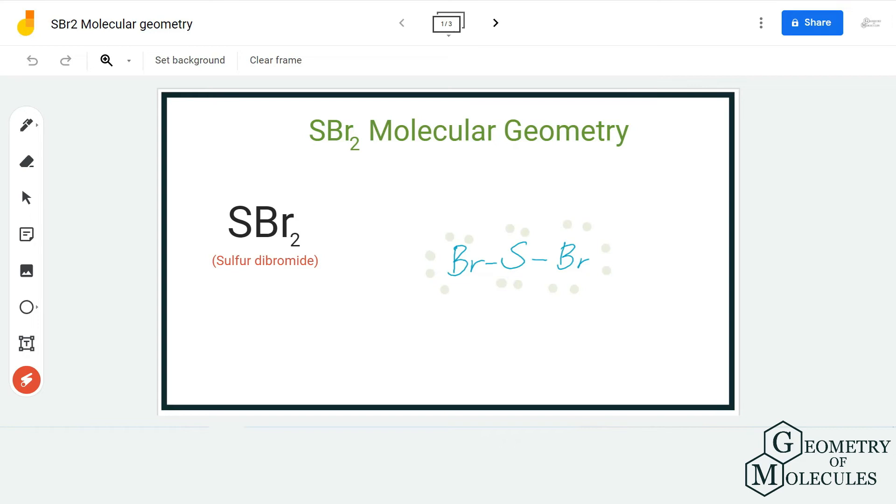Hi guys, welcome back to our channel. In today's video we are going to help you determine the molecular geometry of SBr2, the chemical formula for sulfur dibromide. To determine its molecular geometry, we are first going to look at its Lewis structure.